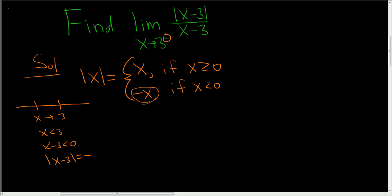So then we end up with minus x minus 3. So now we have a formula for the absolute value of x minus 3 that we can use in our problem.